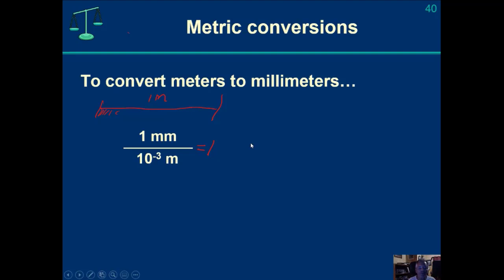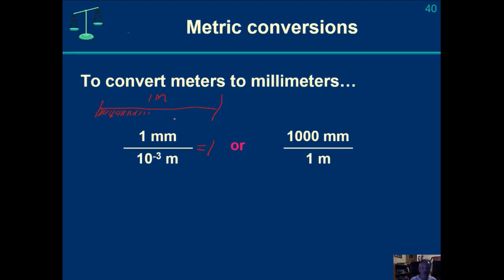We could rewrite that conversion factor: one meter is equal to a thousand of these little tiny millimeters. We could write it as ten to the third millimeters in the numerator and one meter in the denominator. Again, these are equivalent magnitudes of the dimension we call length, so I'm dividing a magnitude by itself, and that is also equal to one.